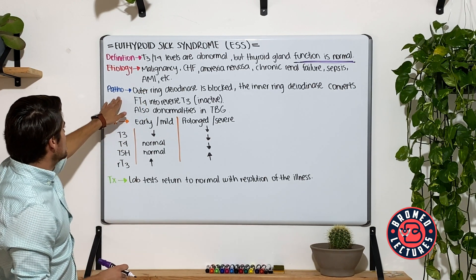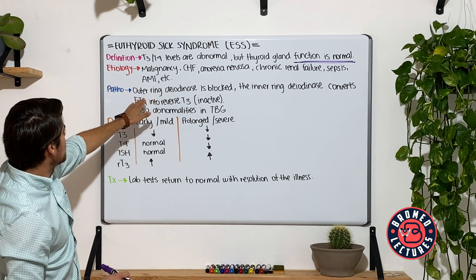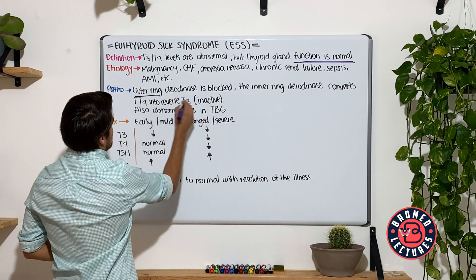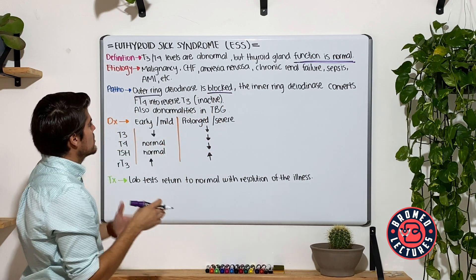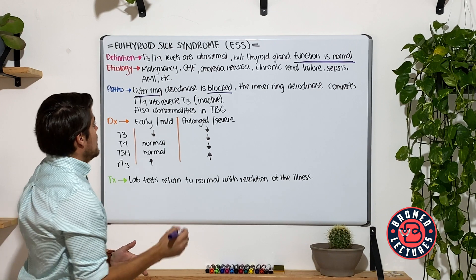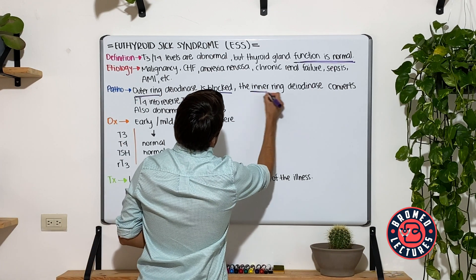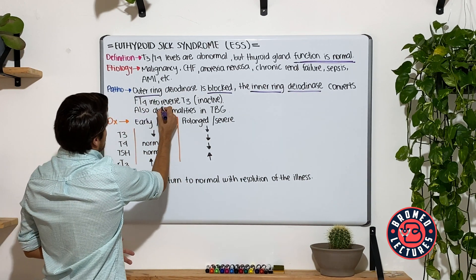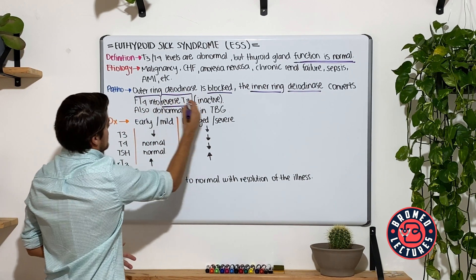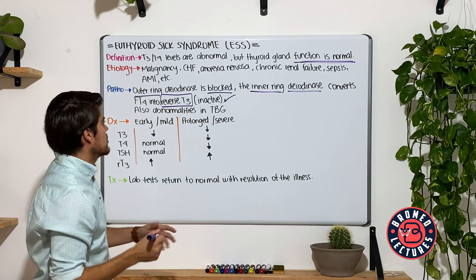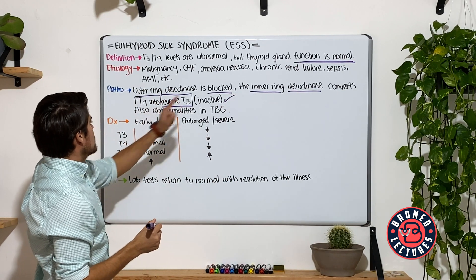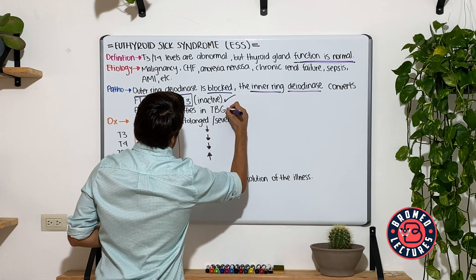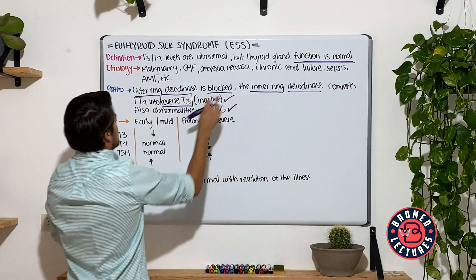The pathogenesis goes like this: the outer ring deiodinase is blocked — the outer ring deiodinase is the one that converts T4 to T3. The inner ring deiodinase converts free T4 into reverse T3, which is completely inactive. So there is an overproduction of reverse T3, which is inactive. There are also described abnormalities in thyroid binding globulins.